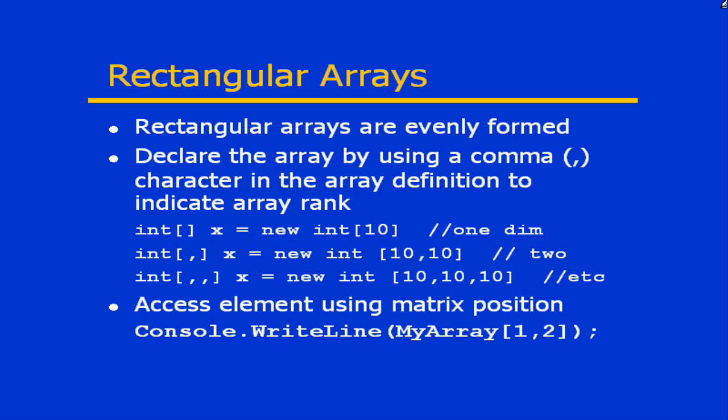If I was interested in a three-dimensional array, I would add another comma into the data type declaration and then specify the number of elements in that third dimension as well. In that third example, we have a cube structure — a three-dimensional array with a total of 1,000 elements: 10 by 10 by 10.